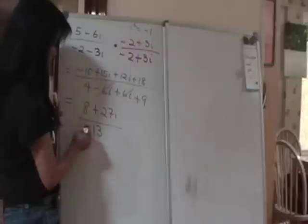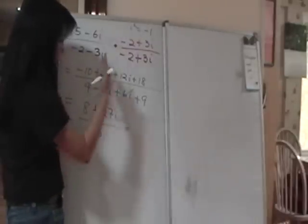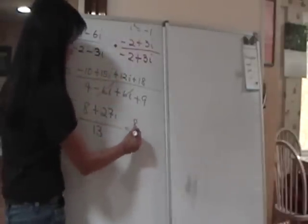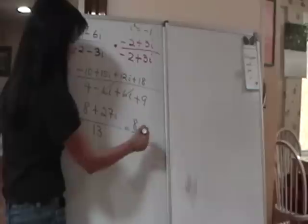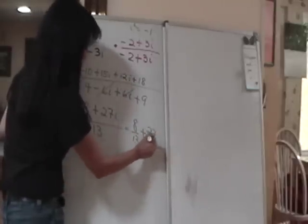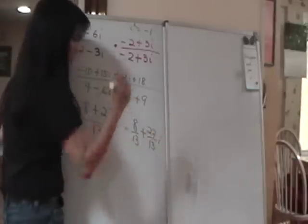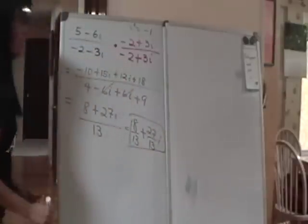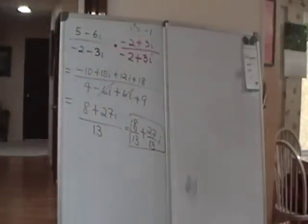And we said we don't leave our answer like this. We separate the real part, which is 8 over 13. Write it separately. Plus the imaginary part, which is 27 over 13. Put the i. So that's how you perform the division.